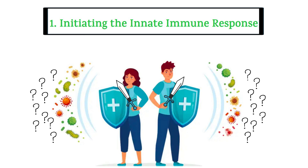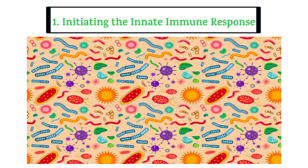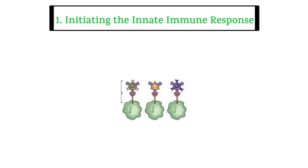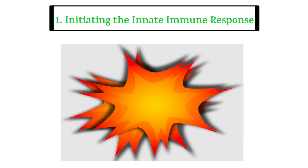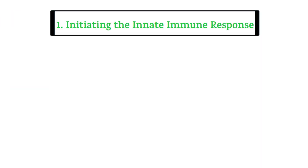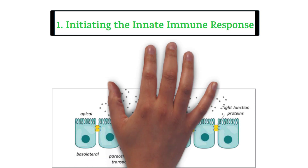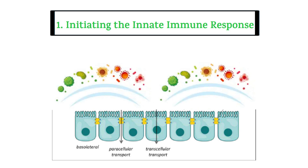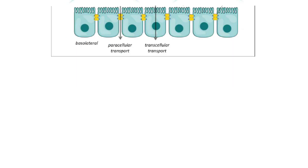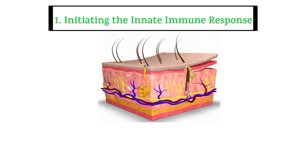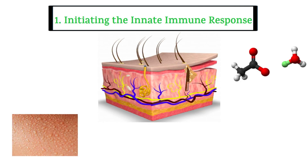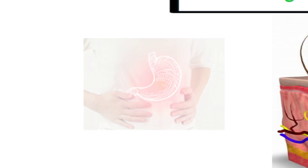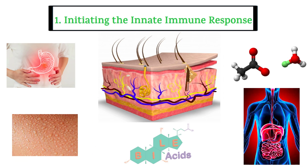It doesn't matter what type the pathogen is. The innate immune system has a strong database regarding pathogen-associated molecular patterns. It recognizes these pathogens, binds to them, and destroys them in many efficient ways. Let's first understand what makes up the innate immune system. First: barrier tissues physically and chemically prevent pathogens. A simple example is skin — skin uses sweat and organic acids to keep many pathogens at bay. The gastrointestinal tract has gastric acid, bile acid, and many digestive enzymes that kill many harmful pathogens.